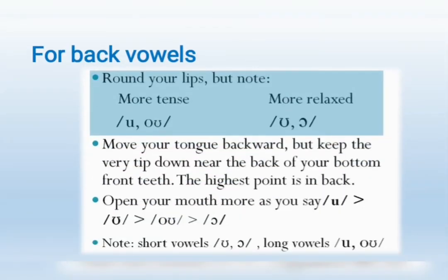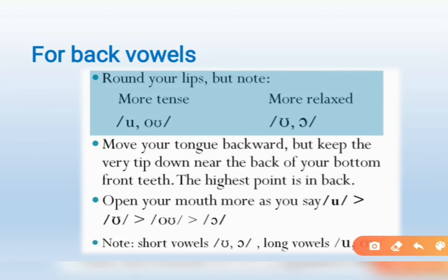For back vowels, round your lips, but note — more tense than for U and more relaxed than for O. Move your tongue backward, but keep the very tip down near the back of your bottom teeth. The highest point is in back. Open your mouth more as you say U, U, O, O. Short vowels, long vowels, examples.